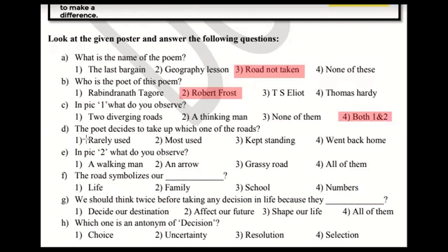Question D: The poet decides to take up which one of the roads? The poet decides to walk on the road that has been used very little. Option A: rarely used — correct. Option B: most used. Option C: kept standing. Option D: went back home. Obviously, option one — rarely used — is the correct answer. Question E: In pick 2, what do you observe? Option 1: a walking man — yes, visible. Option 2: an arrow — yes, visible. Option 3: grassy road — yes, visible. Option 4: all of them — correct, because all three are visible in pick 2.